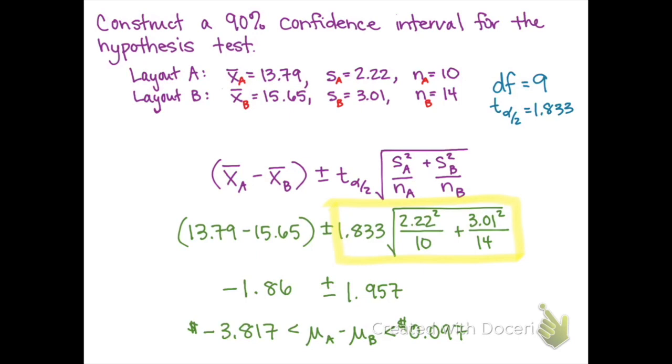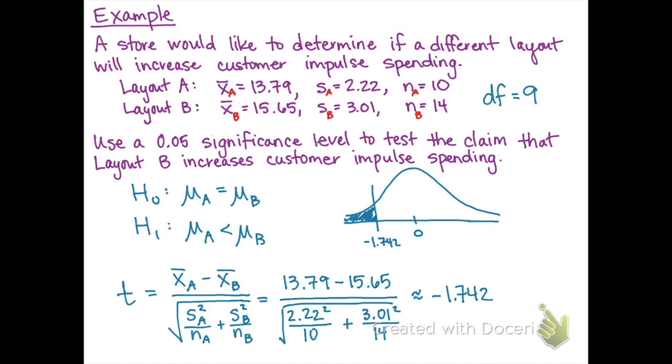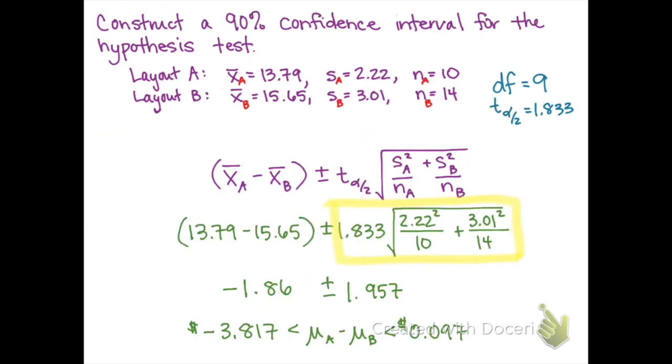Because this confidence interval stretches from a negative number up to a positive number and includes 0, that tells us that we were correct to fail to reject the null hypothesis. Recall that our null hypothesis was that the two means were equal to each other. In other words, the difference between them is equal to zero. And we did find zero in this interval, so it would not give us enough evidence to support the company's claim.